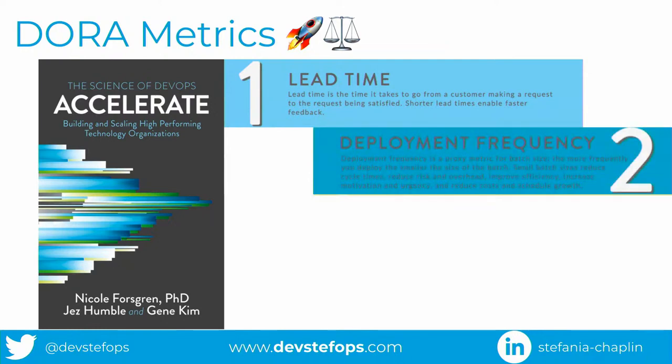Deployment frequency is a proxy for batch size. Remember how we used to have Windows 95 and 98, and now we have 365? When you used to release every few years, that's a lot of changes — so what happens when it goes wrong? That's a lot of changes to sift through. But if you release three changes, that's a lot easier to fix. If you have a very smooth process and you're releasing each change, like Amazon, when something goes wrong it's very easy to figure out exactly what went wrong and what you need to fix.